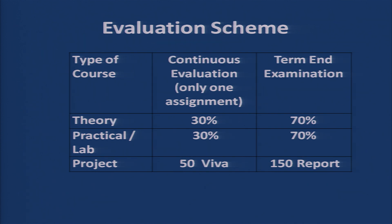The evaluation system for this program covers two types of courses: theory and practical or lab courses. For theory courses, continuous evaluation consists of one assignment carrying 30% weightage, and a viva voce is also conducted. The term-end examination carries 70% weightage. For practical or lab courses, you have one assignment plus a lab record submission, both together constituting 30%, with the remaining 70% from the term-end examination.